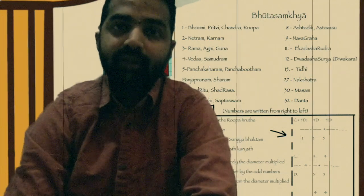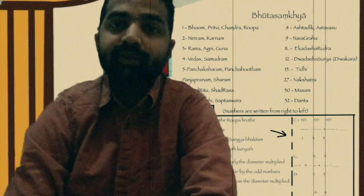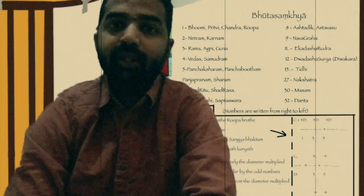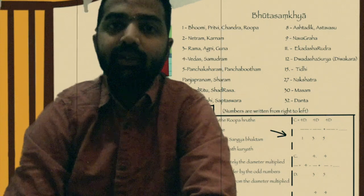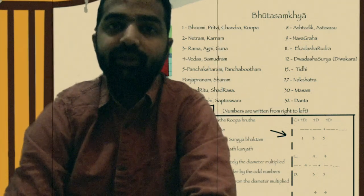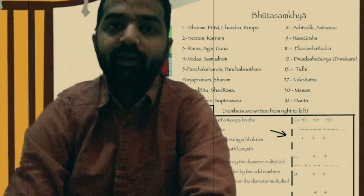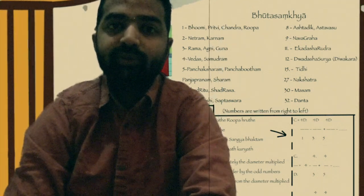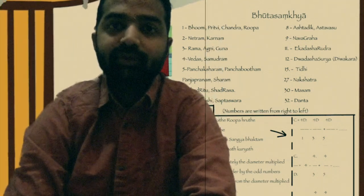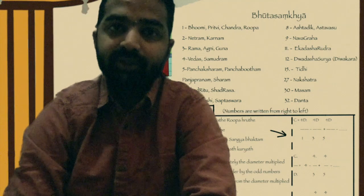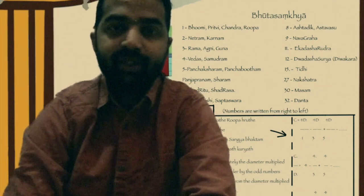Ashtadik — Dik means directions. We have got 8 directions: North, South, East, West, North-East, North-West, South-East, South-West. So, directions represent number 8.